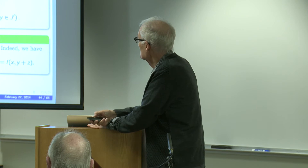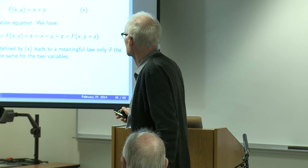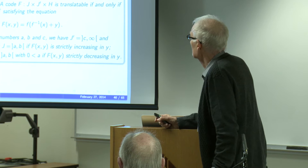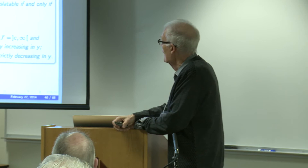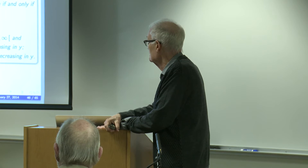A code satisfies the translation equation — is translatable — if and only if it satisfies the first equation. And you can easily show that Beer's Law is translatable. The lemma for translation: a code is translatable if and only if there exists f such that F(x,y) = f(f^{−1}(x) + y).